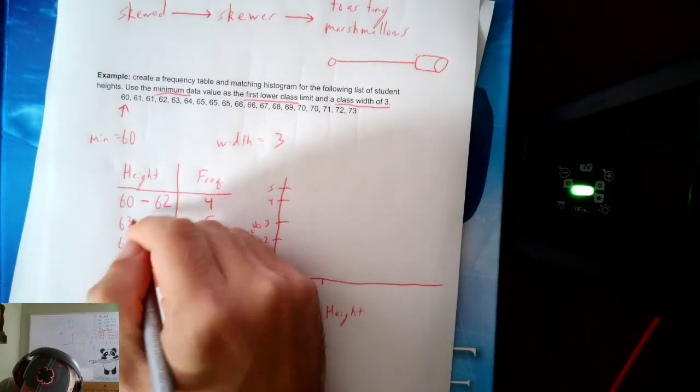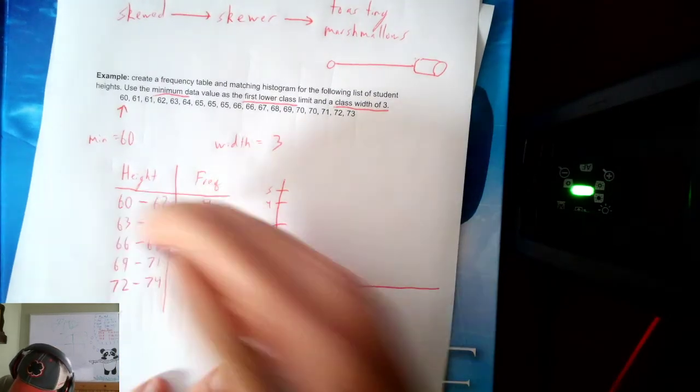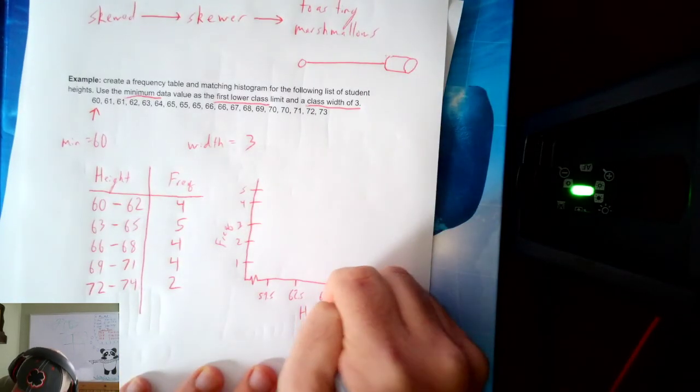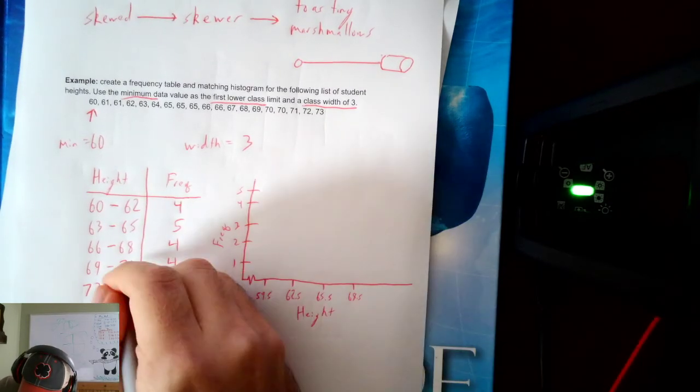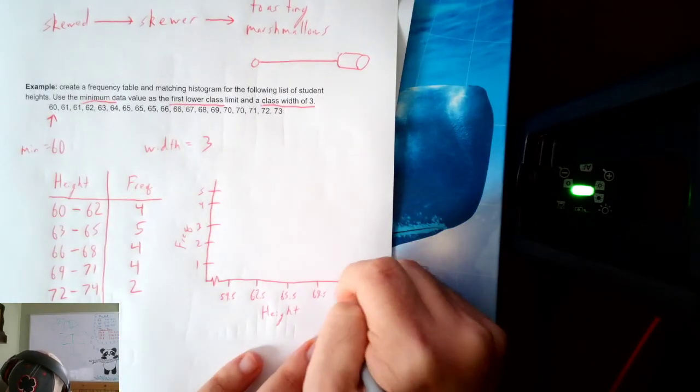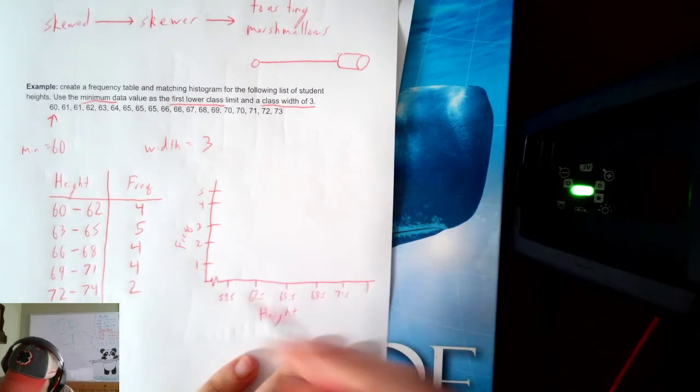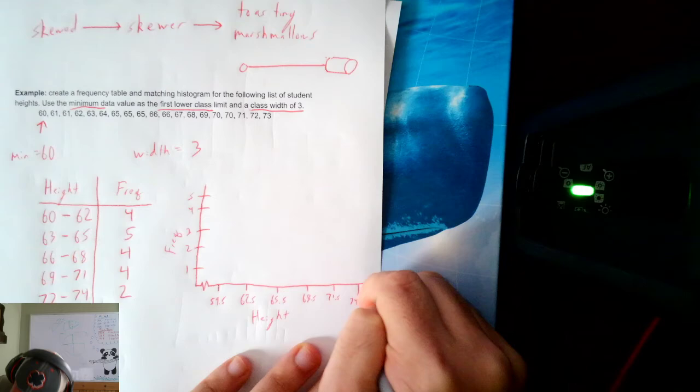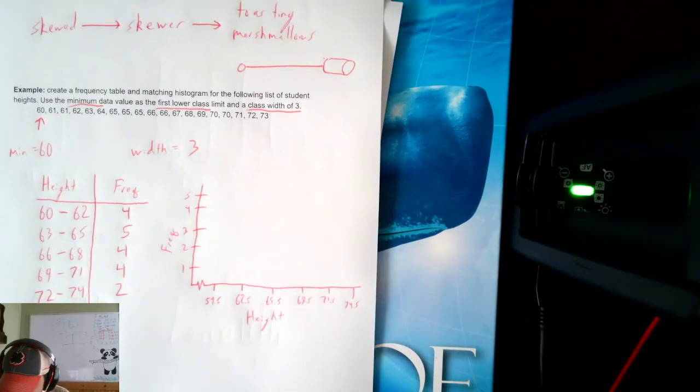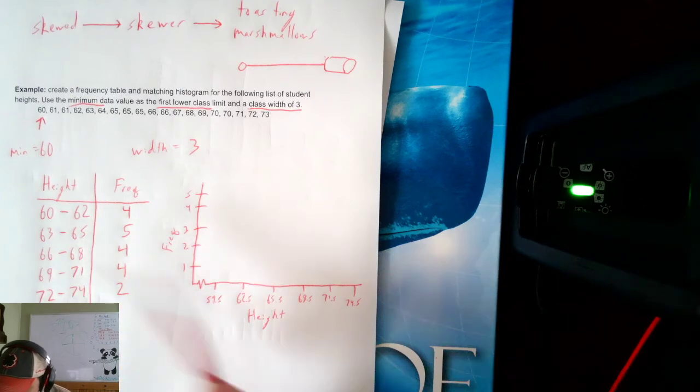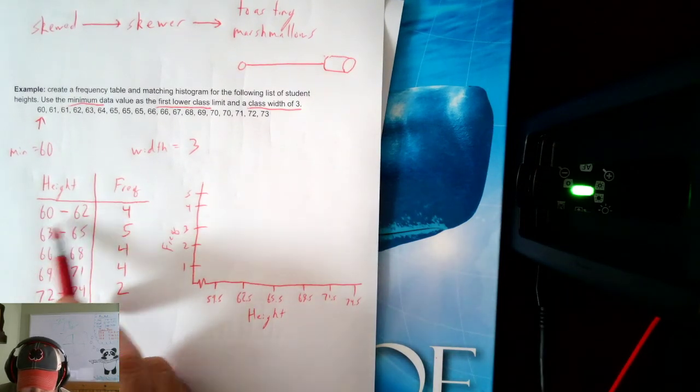Because this class would be 59 ending. So halfway between. Next, between 62 and 63 would be 62 and a half. Then 65 to 66 would be 65 and a half. 68 to 69 would be 68 and a half. And then 71 to 72 would be 71 and a half. And then my end cap would be 74 and a half. Notice they're all three apart. Always. The width is always three. Everything's always three apart. So those are my boundary values. They're the boundary between the two classes.